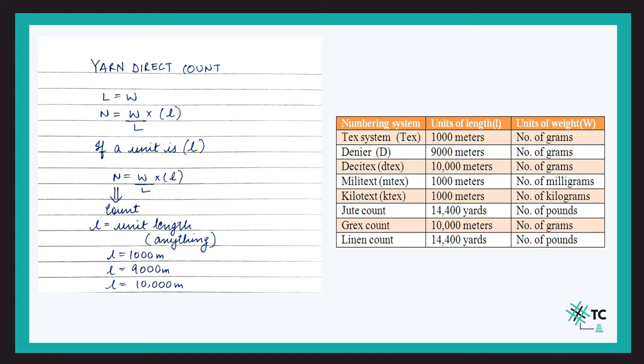Assume you have L meters of a yarn that weighs W. Then 1 meter of that yarn weighs W/L — that's simple unitary method. If you want to calculate the yarn count in tex, you multiply by 1000 meters. So the formula for direct count is W/L × unit length: weight of the yarn divided by the length available, multiplied by the unit length of that counting system.